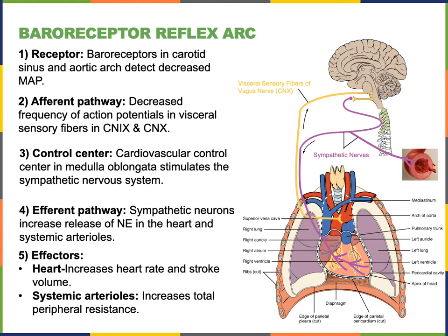The afferent pathway consists of visceral sensory fibers found in cranial nerve 9 and cranial nerve 10. Cranial nerve 9 is the glossopharyngeal nerve, traveling from the carotid sinus, whereas cranial nerve 10, the vagus nerve, carries the sensory fibers coming from the arch of the aorta. In the illustration, I focused on showing the vagus nerve traveling from the arch of the aorta, but the glossopharyngeal nerve would also be carrying this afferent pathway, just coming from the carotid sinus.